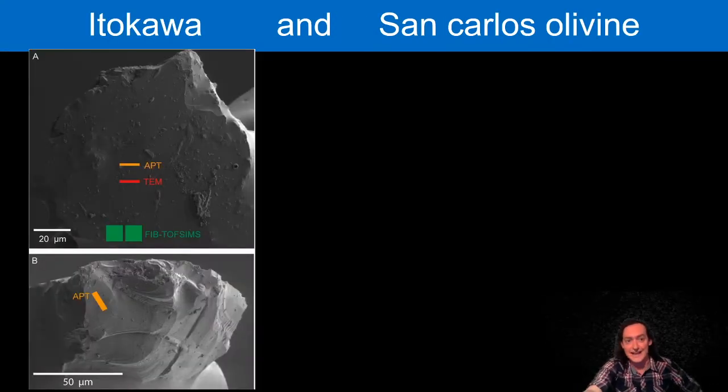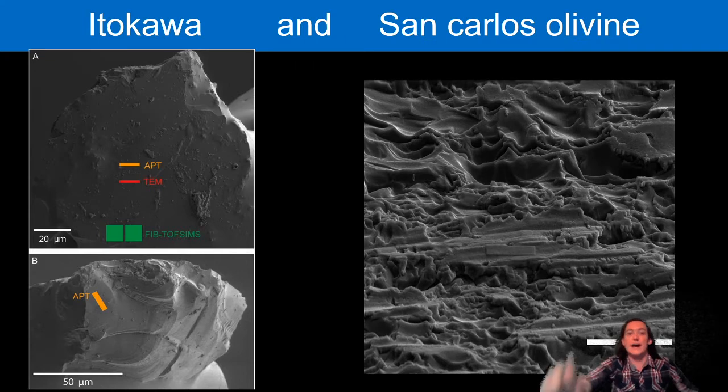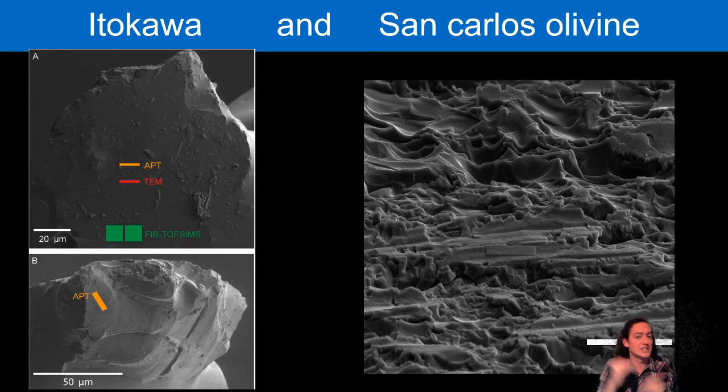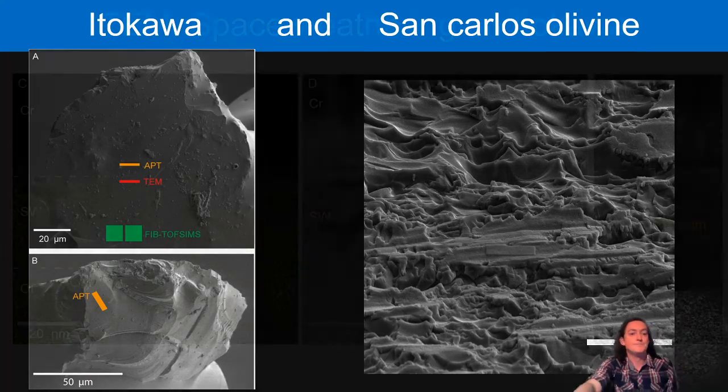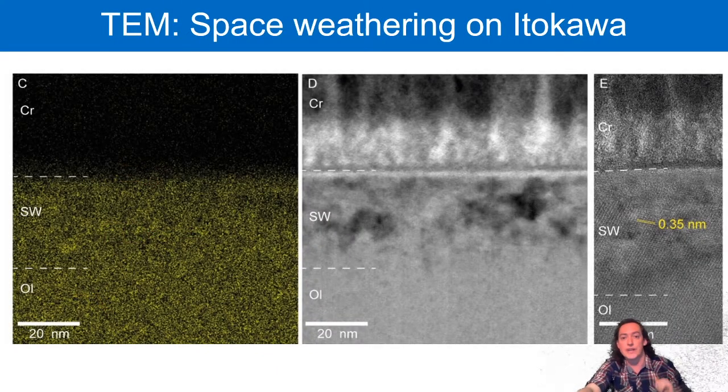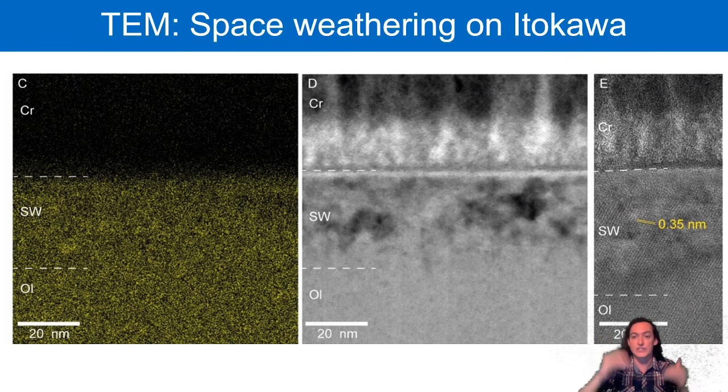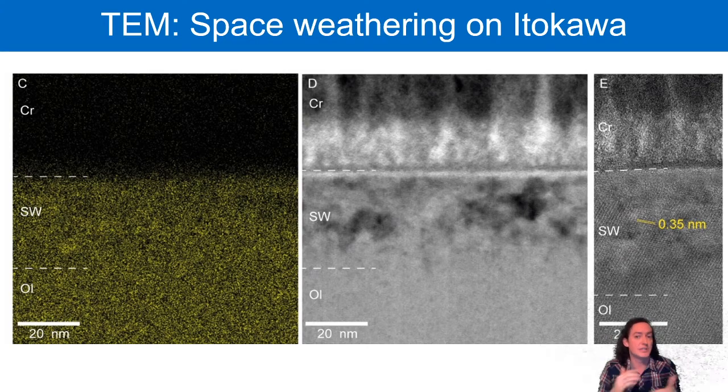We took our particle from Itokawa, as well as a standard San Carlos olivine of the same mineralogy, and bombarded that with deuterium ions to simulate the solar wind, as well as leaving one just in the lab to do nothing, to just double check that we hadn't terrestrially contaminated it in any way. Our TEM results from the nearby area show this is a relatively immature space weathering rim. You haven't destroyed your crystal structure, it's still crystalline, but you do see some of that density differences in the HAADF image.